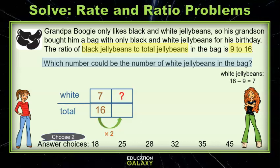I'll multiply the denominator and numerator by 2, then by 3, then by 4, and so on. If there's 32 total jelly beans, 14 would be white, but that's not one of our answer choices. Let's keep going.